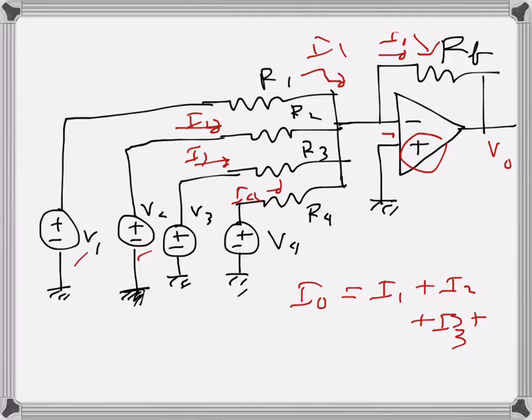We can write I1 in terms of—if we consider this loop starting from this ground to here and to this ground, we can see that there is this voltage source V1, and this is R1. This is the drop here, which is I1 times R1.